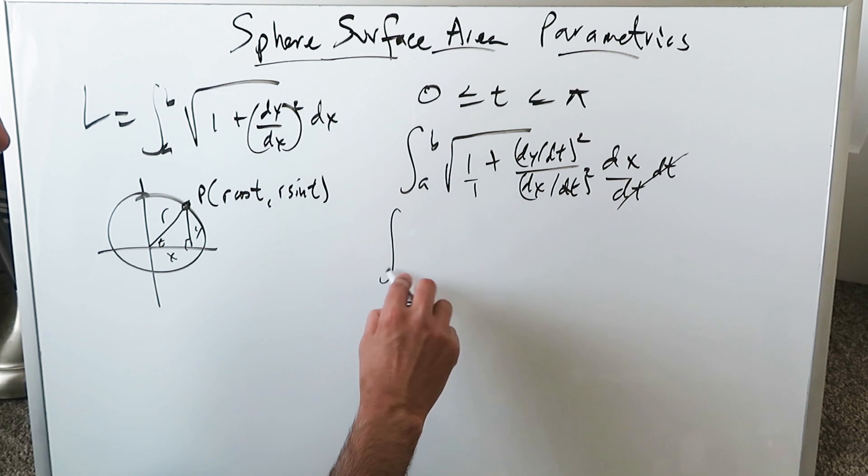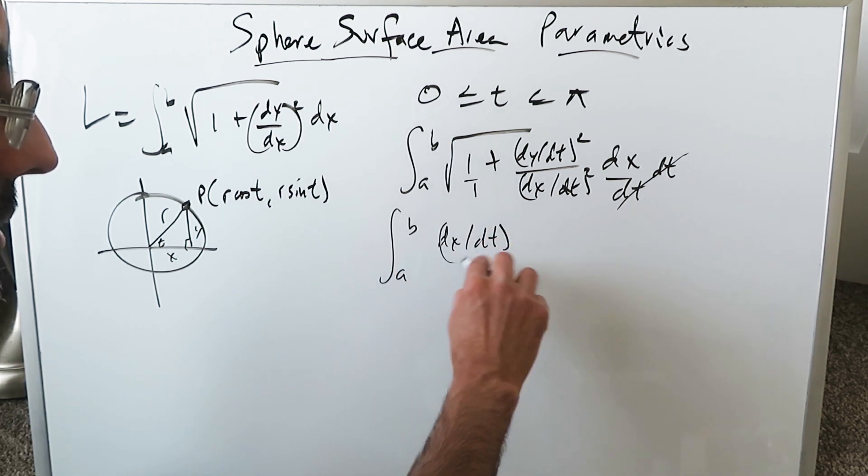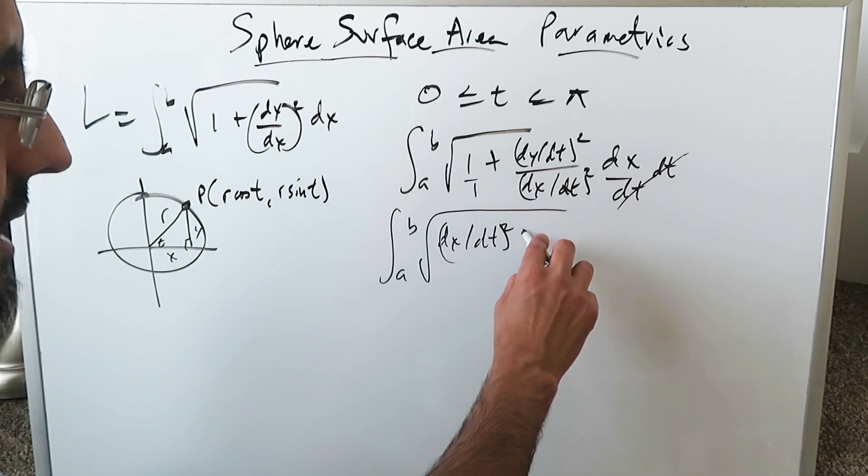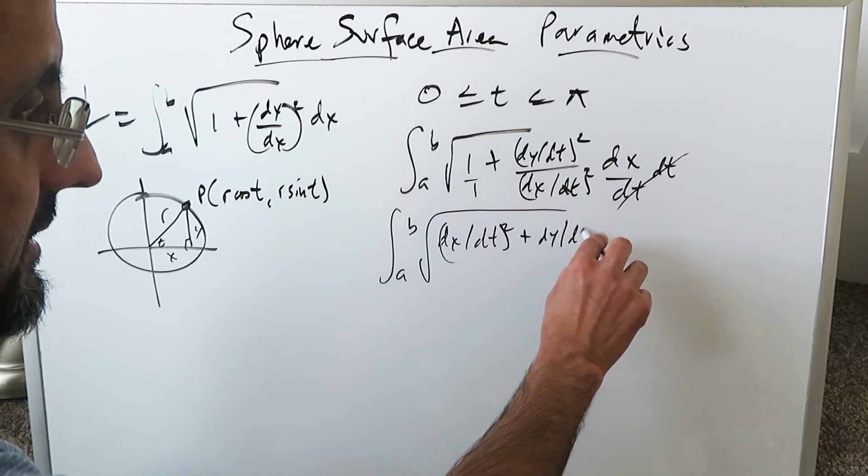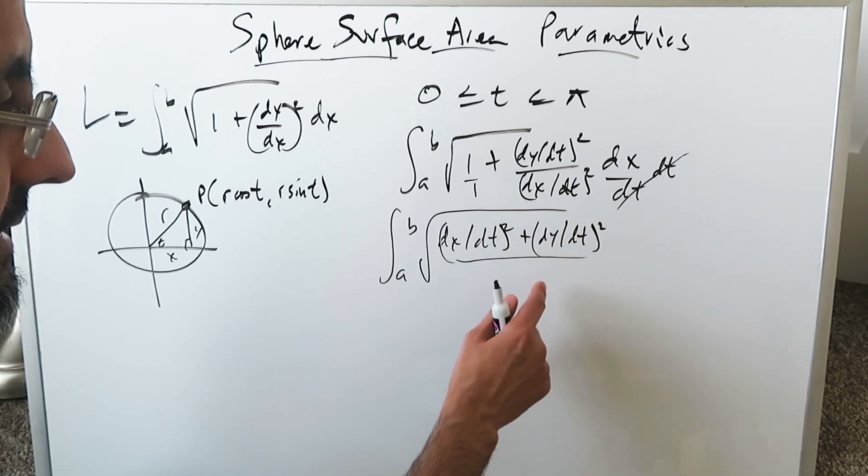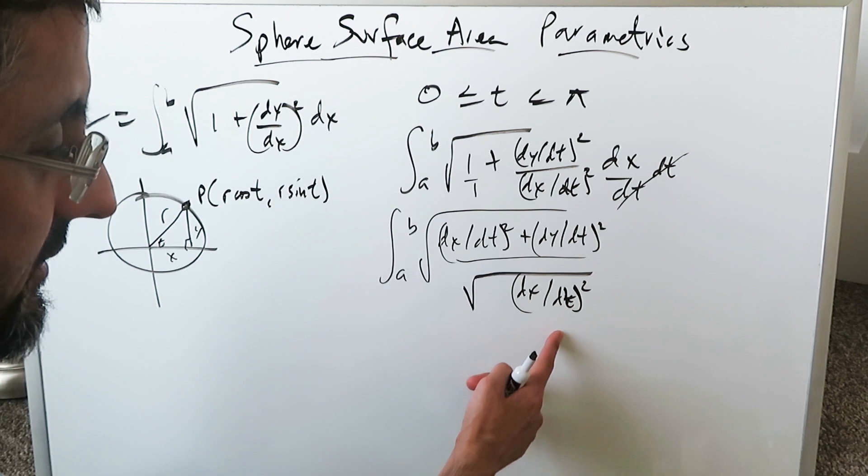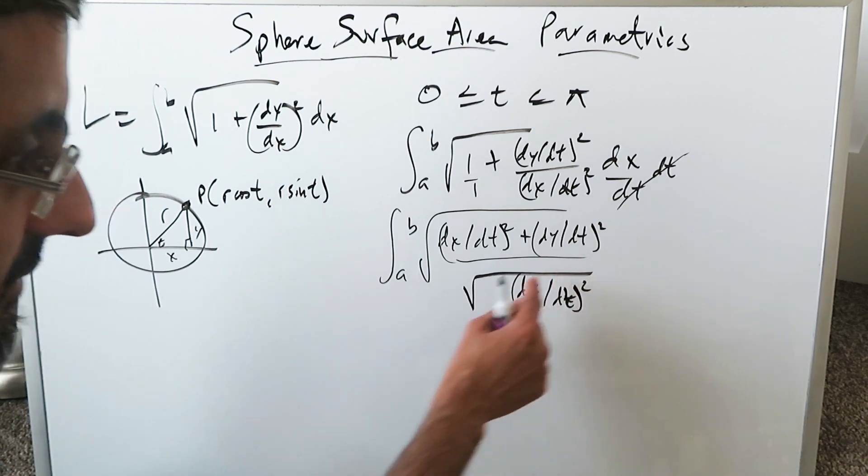Do a common denominator and work on this. From a to b, I'll have (dx/dt)² – all of this is in a root – plus (dy/dt)². This common denominator, which is (dx/dt)², can be brought under its own radical by means of properties of radicals, and dx/dt whole square and square root.